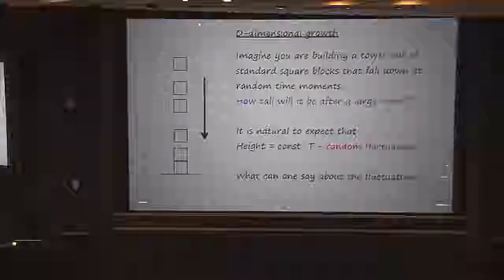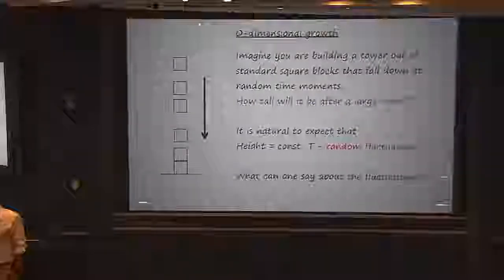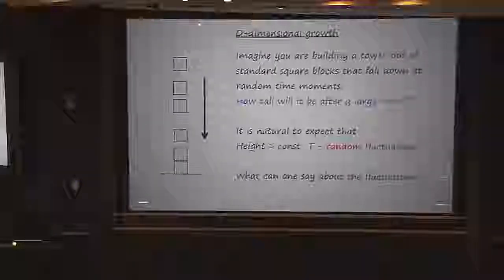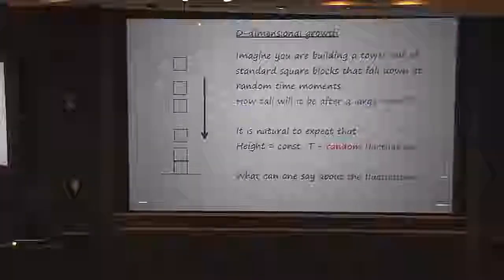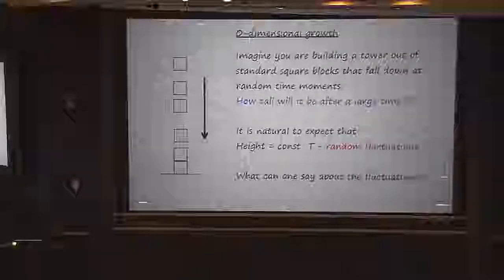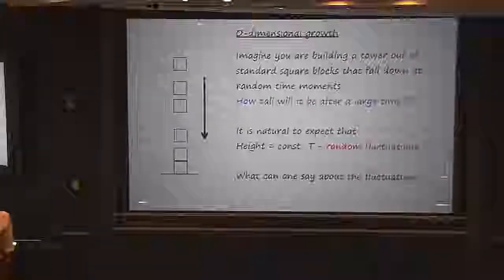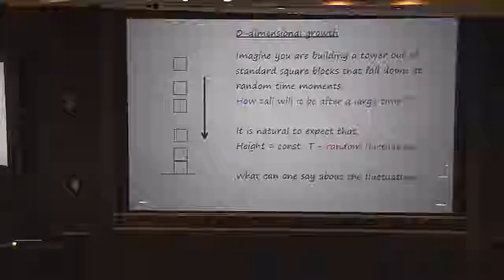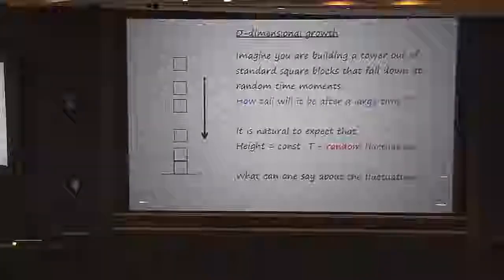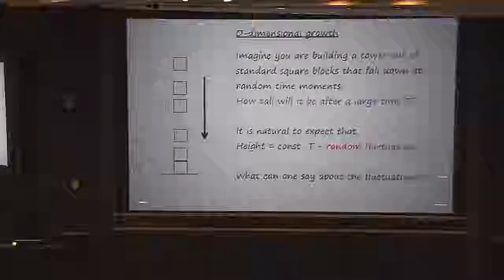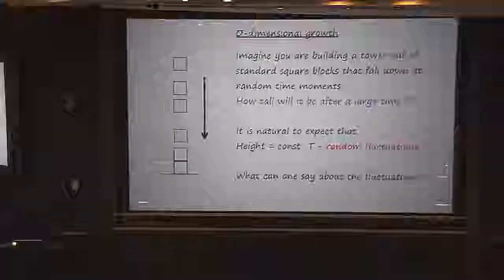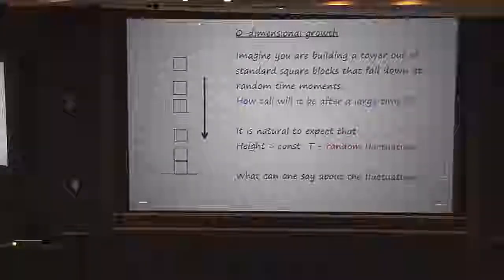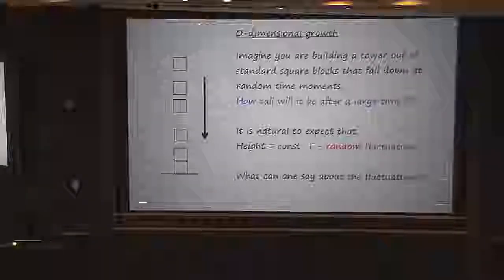The simple-minded picture on the left is supposed to picture a game that people usually play with their kids when the kids are little — building a tower out of standard blocks. Imagine that you are building a tower with standard blocks, and the blocks are scattered on the floor. It takes a little bit of time for you to find the next block, and then once you find it, you put it on top. So the time it takes to put the next block is random.